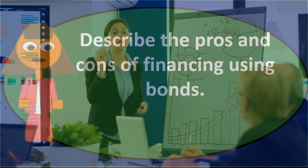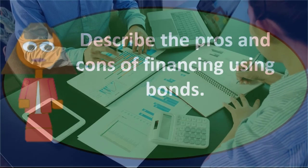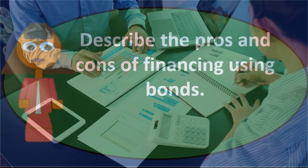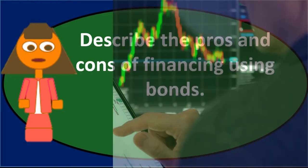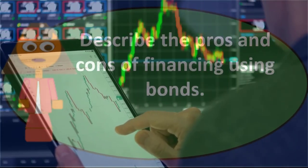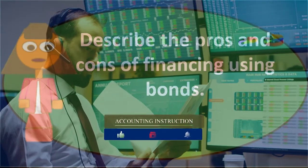The downside of issuing stock is that we're giving away equity interest in the company — that means giving away potential rights to dividends, voting rights, and claims to the net value of the company in a liquidation. So with a bond or loan you must pay back interest and principal, which is not great, but you don't give away any control. With stocks you don't pay back interest or principal, but you're giving away ownership and control of the company.